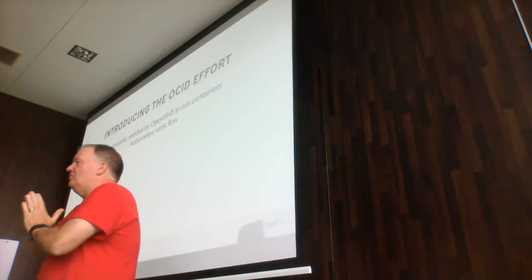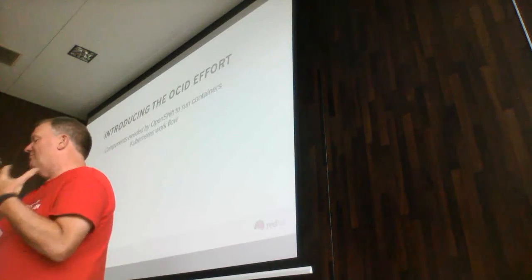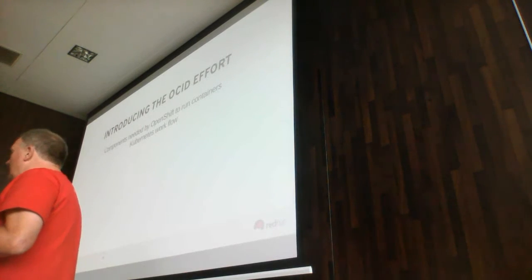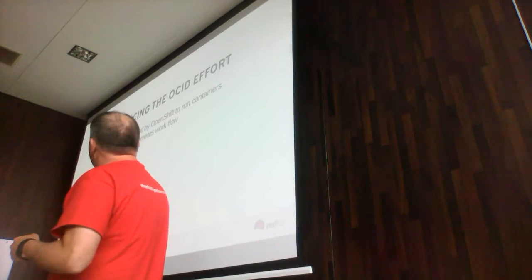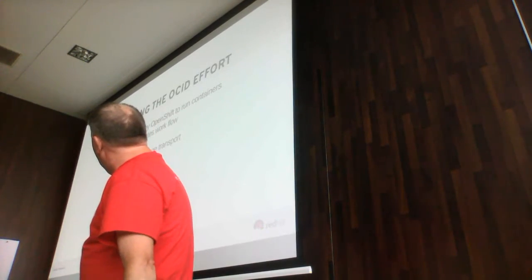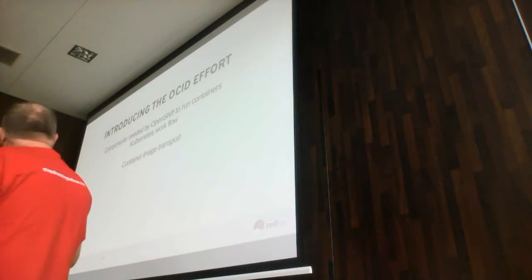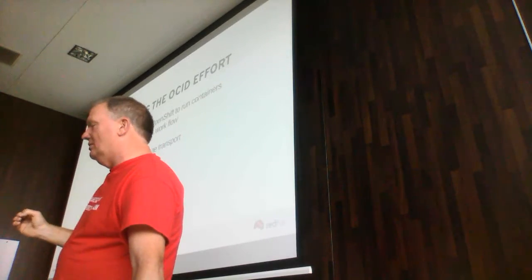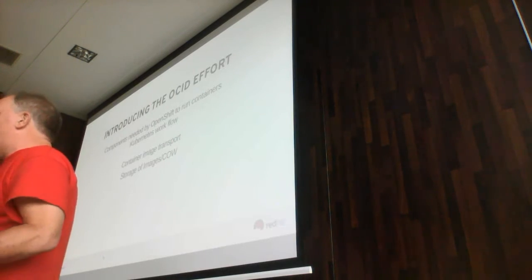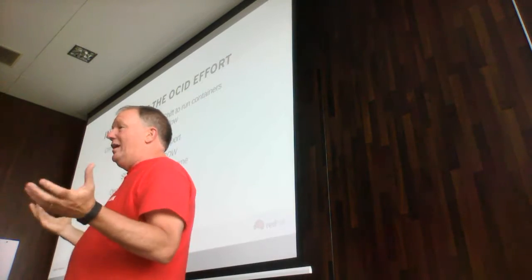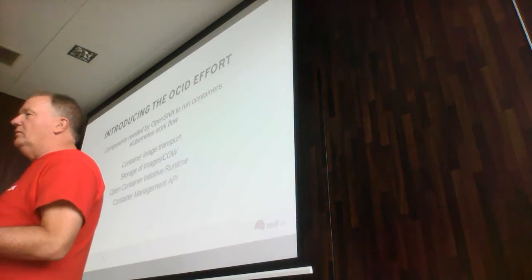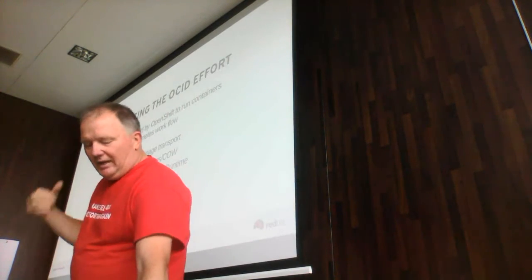We've talked about signing, the atomic command, running containers on shared storage, and copy-on-write file systems. Now let's look at a new tool called OCID — basically the components needed by OpenShift and Kubernetes to run containers in production. We want a simplified daemon. There are four components in an OCID environment: container image transport, a way to store the image once pulled, a way to run the container, and an API wrapper around all these components.